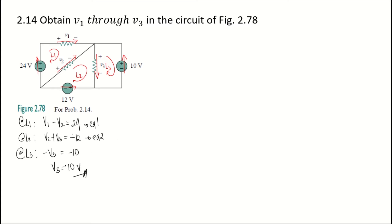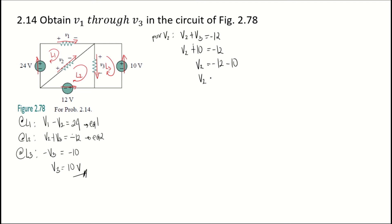Now that we have the value of V3, we can solve for V2. Using Equation 2: V2 plus V3 equals negative 12. Substituting V3 equals 10 volts: V2 plus 10 equals negative 12. Transposing 10 to the right-hand side: V2 equals negative 12 minus 10, so V2 equals negative 22 volts.